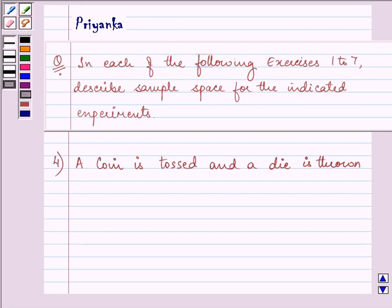Hello and how are you all today? The question says in each of the following exercises 1 to 7, describe sample space for the indicated experiment. Now here the experiment which is given to us is a coin is tossed and a die is thrown.